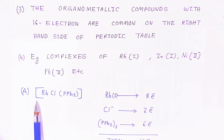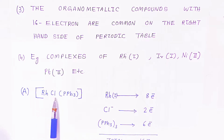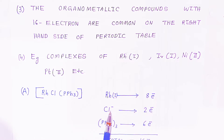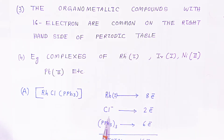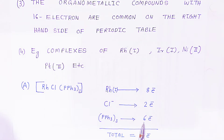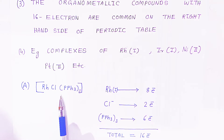For the first example, we have a rhodium complex with chlorine and triphenylphosphine (3 ligands). Rhodium(1+) carries 8 electrons in its outermost orbit. The chloride ion donates 2 electrons, and the 3 triphenylphosphine ligands each donate 2 electrons, giving a total of 6 electrons. Adding these: 8 + 2 + 6 = 16 electrons total. This complex is very stable, and this is how we explain its stability.